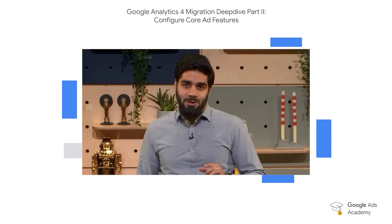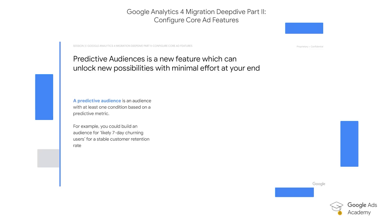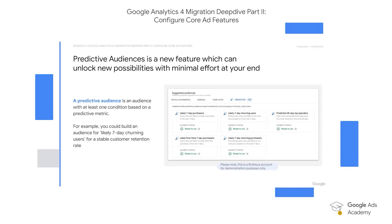And now on to the new GA4 feature: predictive audiences. This will translate your job of building a complex audience using costly machine learning models to a mere click. You have a wide variety of predictive audiences to choose from, making you a proactive marketing strategist. There are options such as likely seven-day purchasers or likely seven-day churning users. For example, you might want to customize an offer for seven-day likely churning purchasers for a stable customer retention rate.